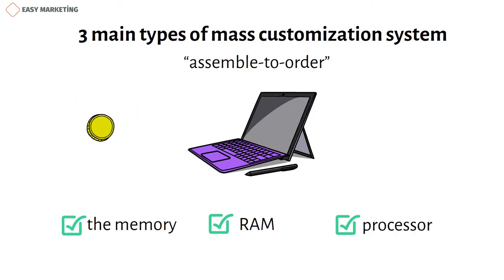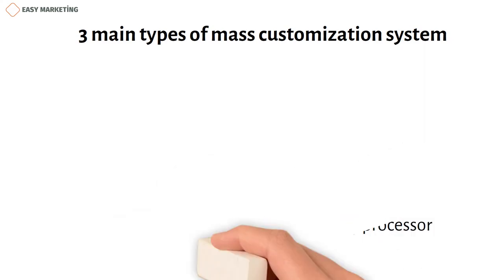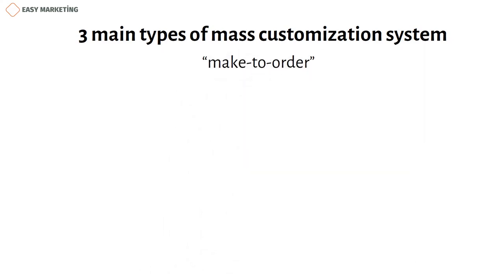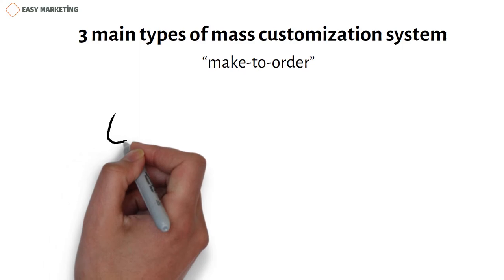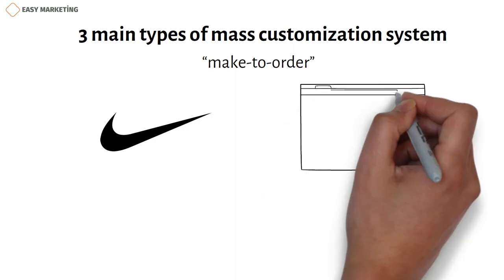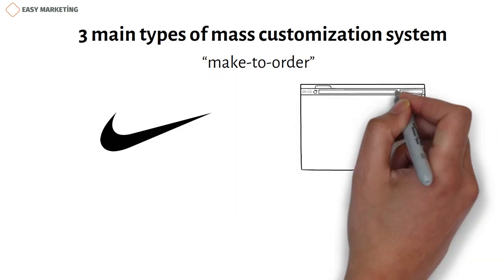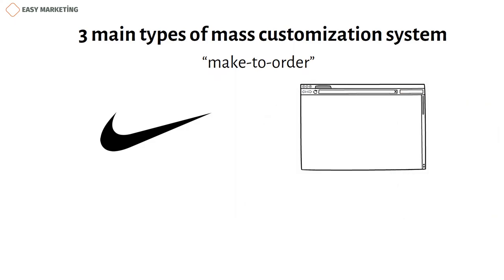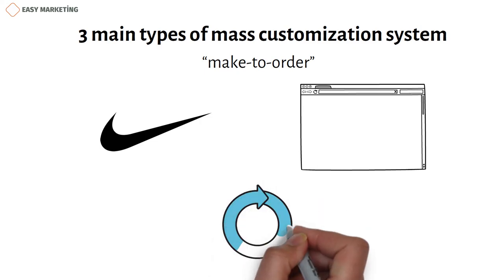The last type is called make-to-order. This time, the manufacturer starts production of the product after your order, as in the example of Nike. When ordering from the brand's website, you can change every detail, from the main color of the shoes to the color of the laces. Because this is unpredictable for the manufacturer, production starts after the order.